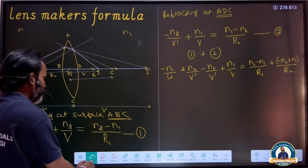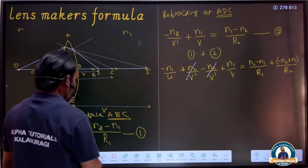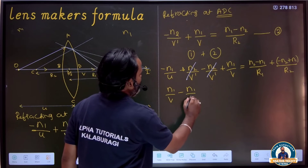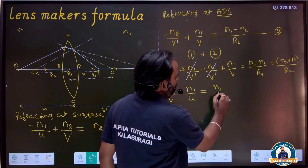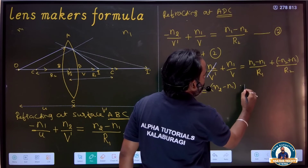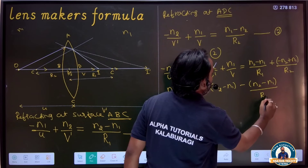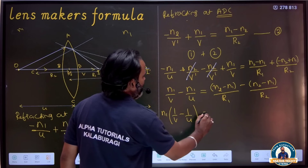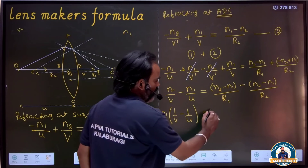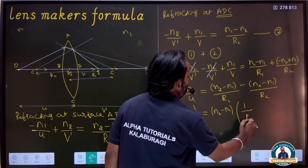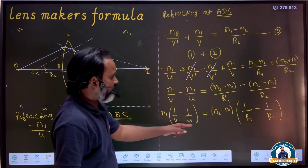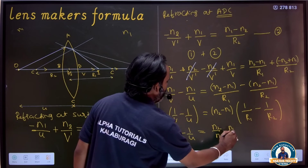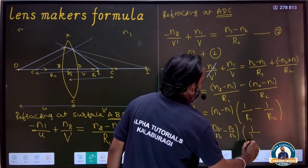If you observe the result carefully, we will cancel and simplify. The result is: N1/v minus N1/u equals (N2 minus N1)(1/R1 minus 1/R2). Taking N1 common on the left: N1(1/v minus 1/u) equals (N2 minus N1)(1/R1 minus 1/R2). Dividing both sides by N1: 1/v minus 1/u equals (N2/N1 minus 1)(1/R1 minus 1/R2).